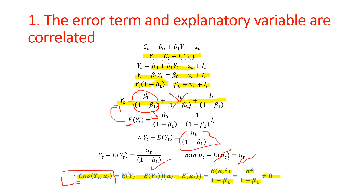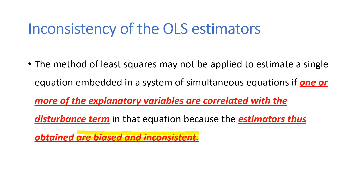Therefore, one of the important assumptions of the OLS method is violated. We can conclude that the method of least squares may not be applied to estimate a single equation in a system of simultaneous equations, because one or more of the explanatory variables are correlated with the disturbance term, resulting in estimators that are biased and inconsistent. This is the problem of simultaneous equations — the correlation between the disturbance term and the explanatory variable. In the next lecture, we will see how to deal with this problem. Thank you so much.